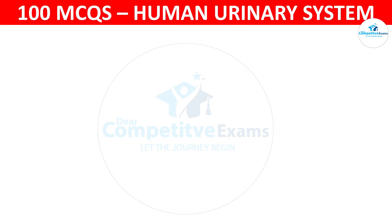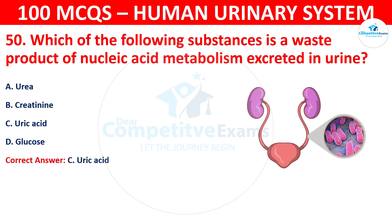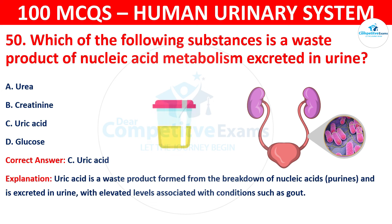Question 50: Which of the following substances is a waste product of nucleic acid metabolism excreted in urine? The options are: urea, creatinine, uric acid, or glucose. The correct answer is C, that is uric acid. Uric acid is a waste product formed from the breakdown of nucleic acids and is excreted in urine, with elevated levels associated with conditions such as gout.